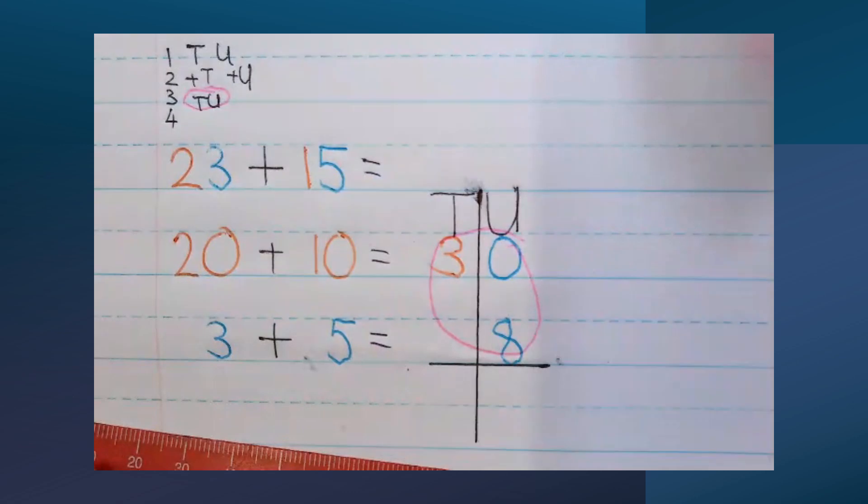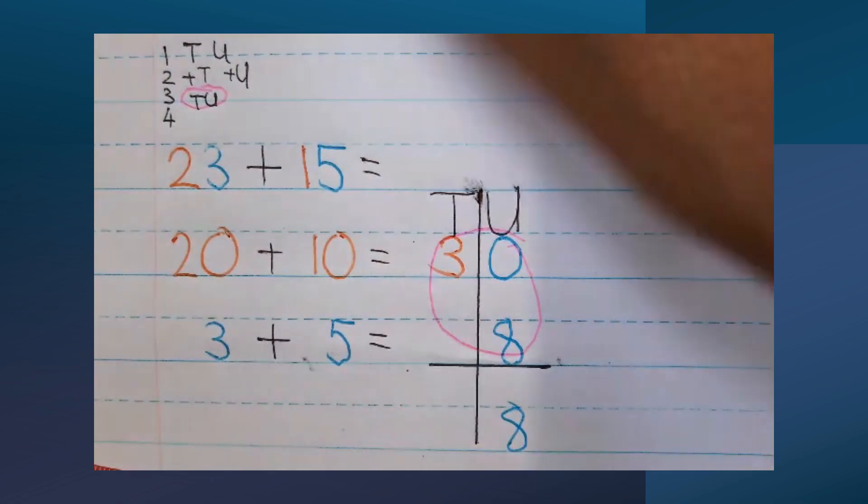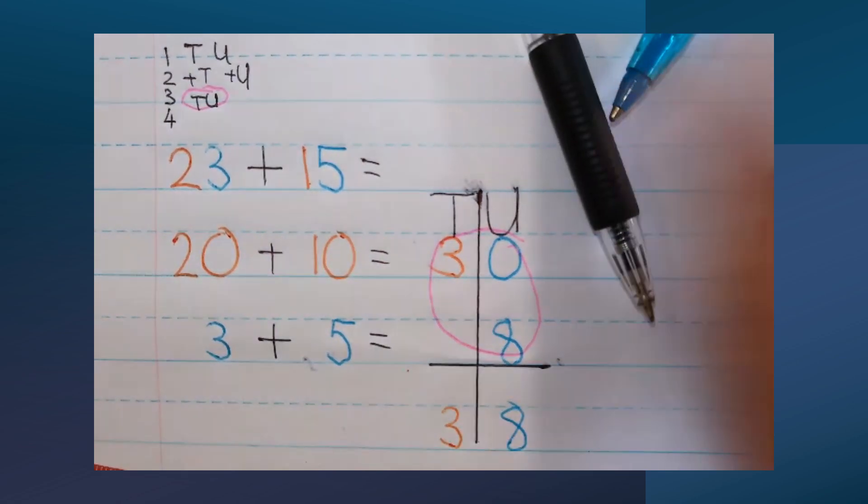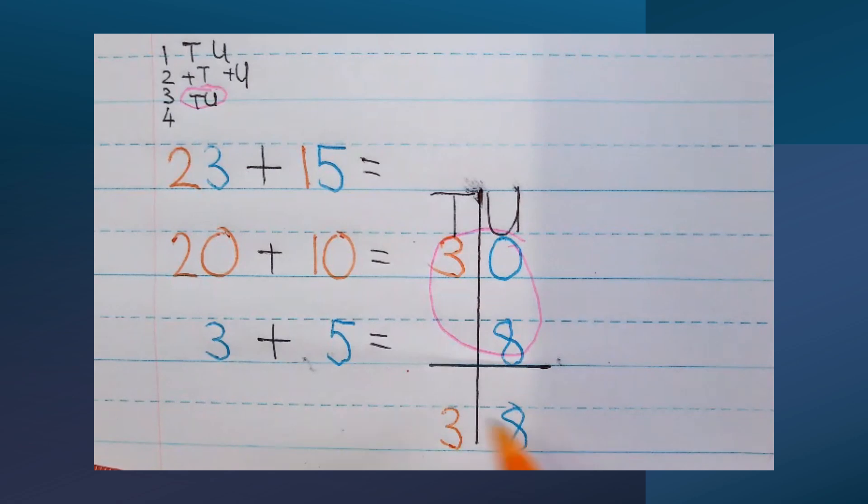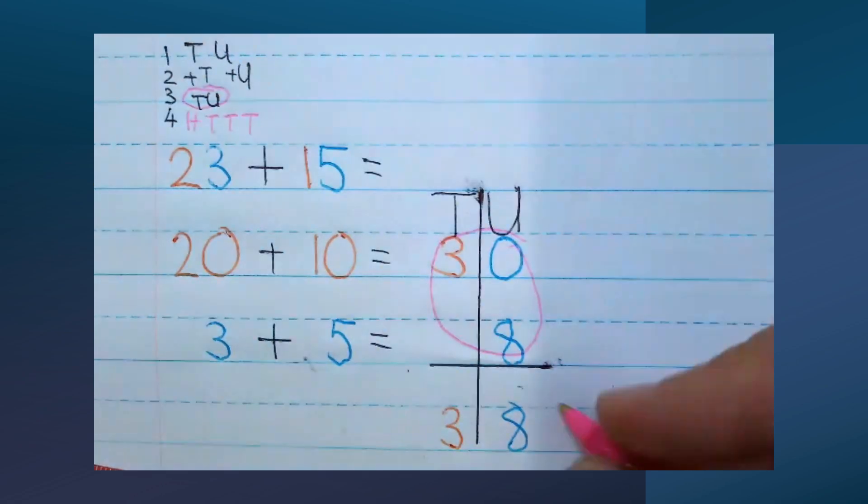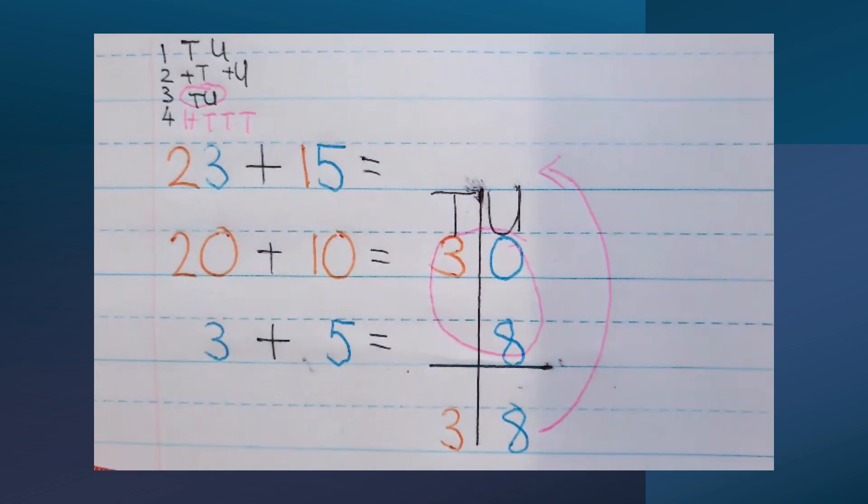A zero and an 8 will give me 8. 3 and nothing will give me 3. 30 and 8 will give me 38, so that's my answer. But I've got one final step. I need to hop to the top. I need to take my answer now and go write it in by my open number sentence.